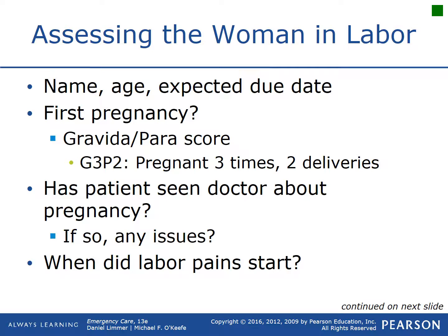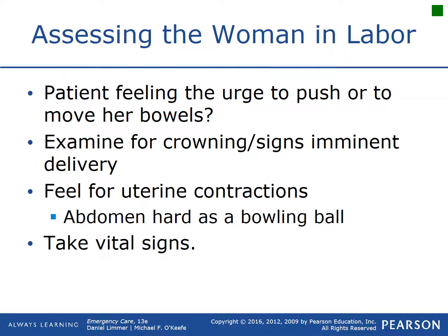Using OPQRST, ask when the labor pains started and how regular they are. Ask if the patient has any sensation to push or move their bowels — if a patient says they feel like they have to poop really bad, that's a lot of pressure being exerted and could be a sign of imminent delivery. You need to examine the vagina to see if there is any crowning or signs of imminent delivery, and feel for uterine contractions by placing your hand on their belly. If the abdomen is as hard as a bowling ball during a contraction, that's a true contraction.